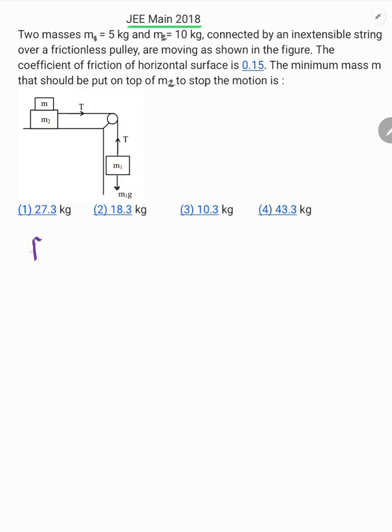Now here, limiting friction is equal to mu s times M2 plus M into g. That is acting in the left side direction. Here mu s is 0.15, M2 is 10, M is unknown into g. This is equation number 1.